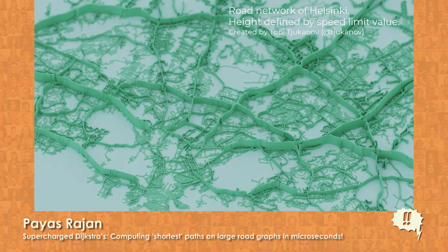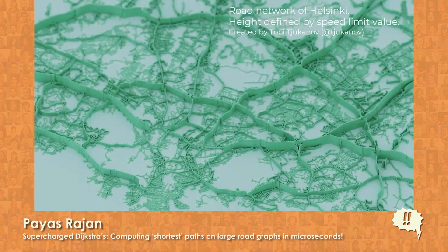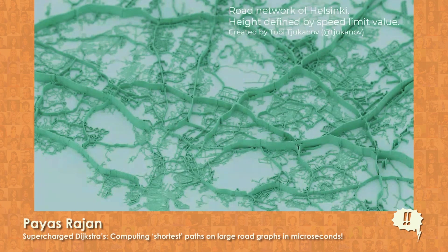Fun fact: Germany categorizes their roads into seven categories. Under this model, routing becomes like driving — to travel long distances you want to hop on the highway as soon as possible, keep driving on the highway, and only descend to local roads when you get close to your destination. This is exactly how the search works when using highway hierarchies.